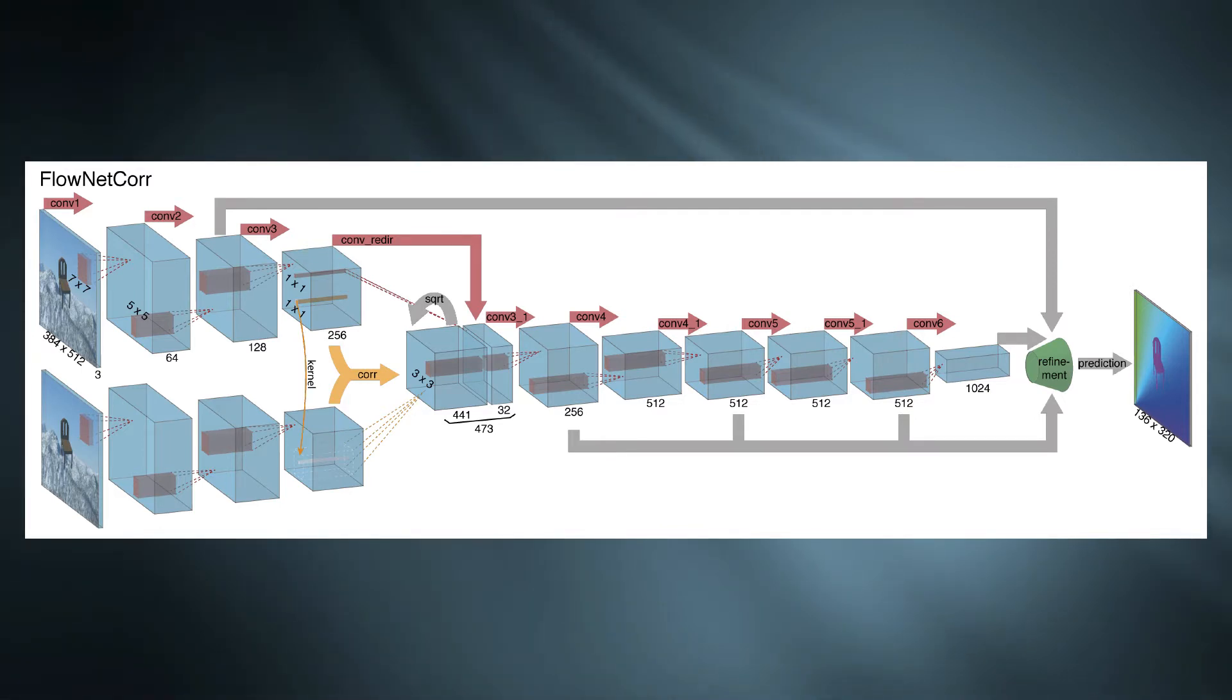However, in this specific task, the network should be able to find the matching information before combination. Hence, they have added a correlation layer for this purpose.